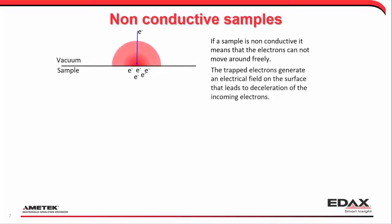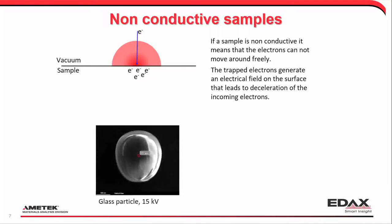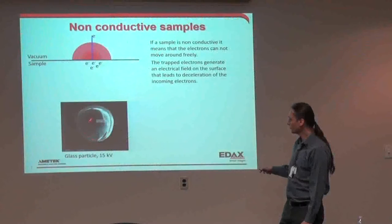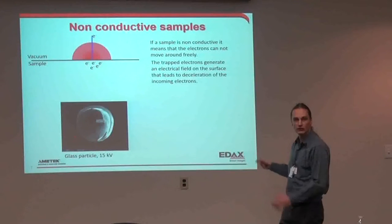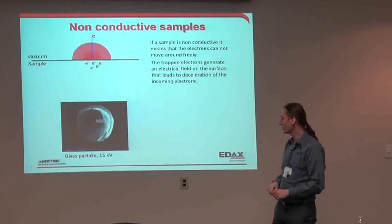If we have a bunch of charged particles sitting still, we get an electrical field — a field builds up on the surface of the sample. The electrons coming down now have to penetrate through this field, meaning they are decelerated as they move down to the sample. This affects our imaging. This glass particle at 15 kV is highly non-conductive — we get strange behavior. It's actually a round particle, but you can see strange contrast, some sharpening toward the edge, and different field build-up depending on where we're hitting the sample.